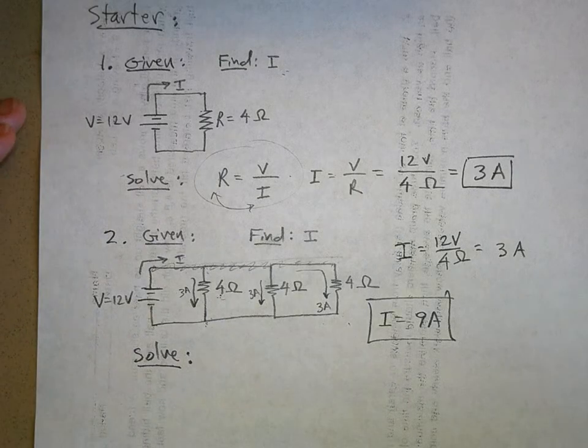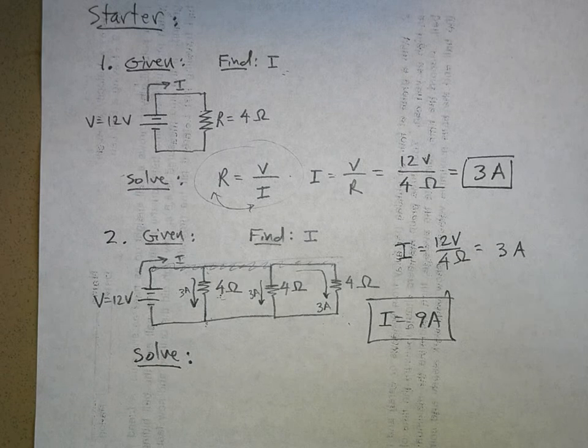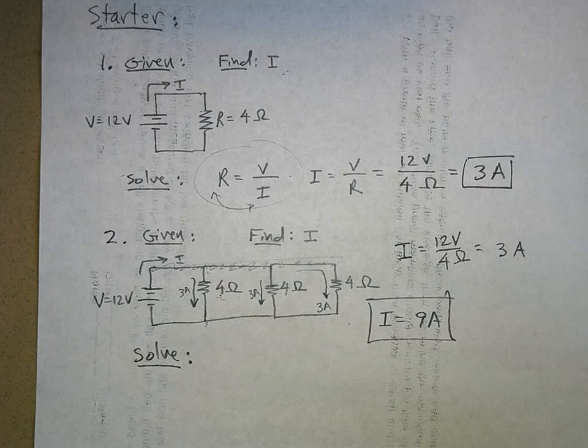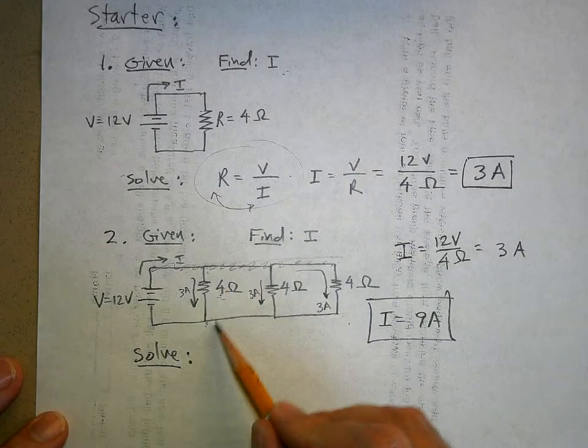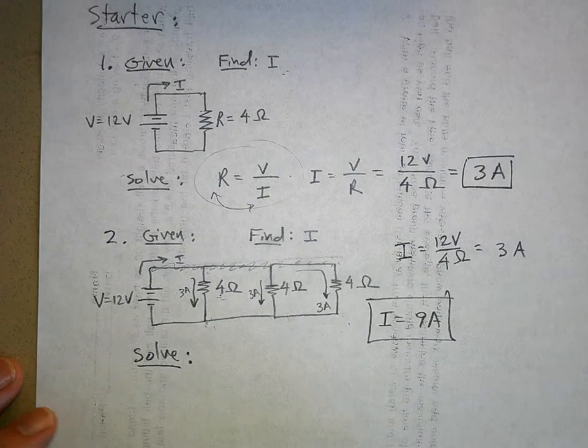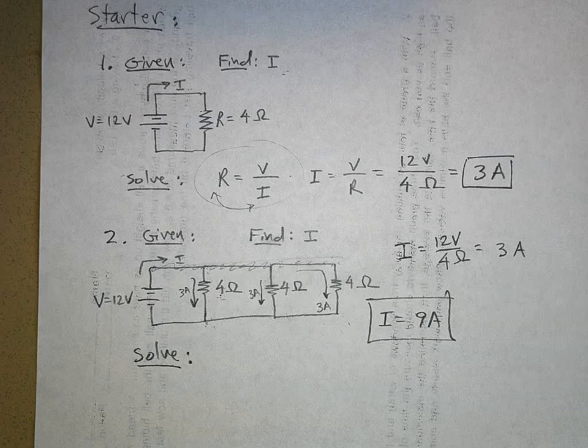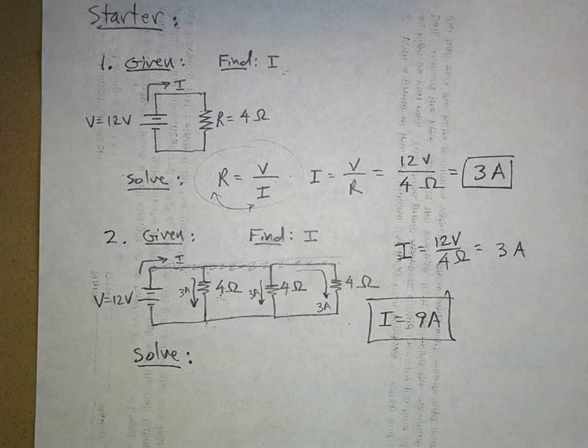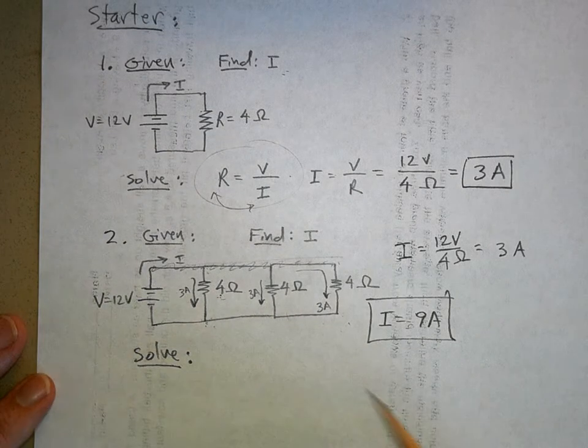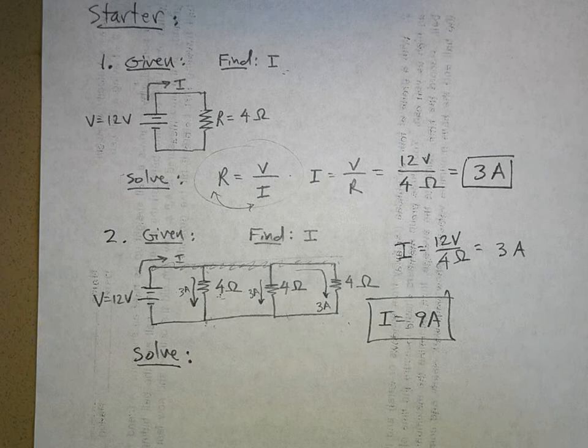This is why when you assembled your parallel circuits, if you hook up your light bulbs in parallel like this, they would all burn with the same brightness and very bright because they're getting all the voltage. They don't have to share the voltage, but you're going to burn your battery out a lot quicker.